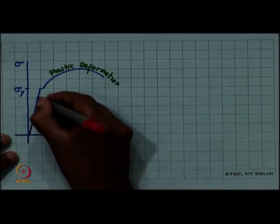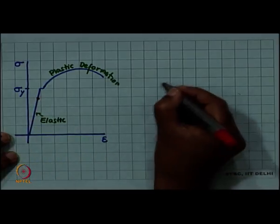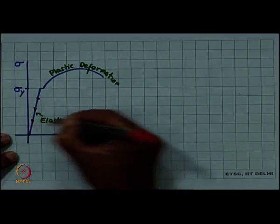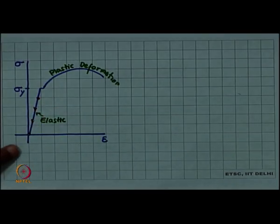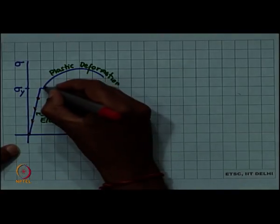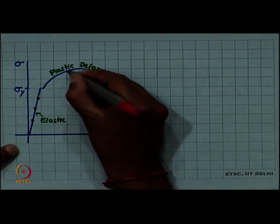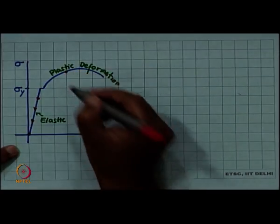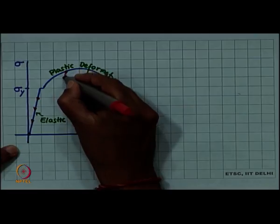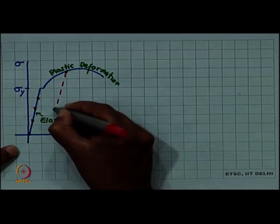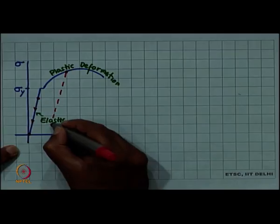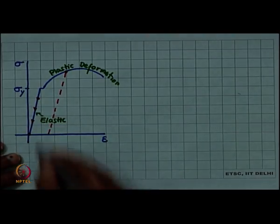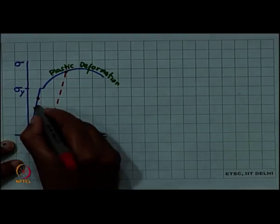If we start unloading at any point in the elastic part of the curve, then there will be no permanent deformation. But if after we have deformed up to a certain point in the non-linear regime and from there if we unload, then it will follow a line parallel to the initial part of the curve, that is the Young's modulus.